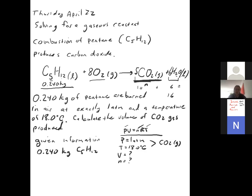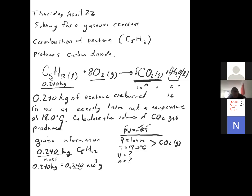We'll start by looking at the amount of pentane given. They gave us the mass — it's 0.240 kilograms, not grams. So let's convert to grams: 0.240 kilograms times 10³ grams equals 240 grams of C5H12. If you have the mass of a substance, divide by its molar mass to get the number of moles.